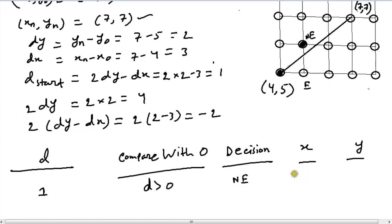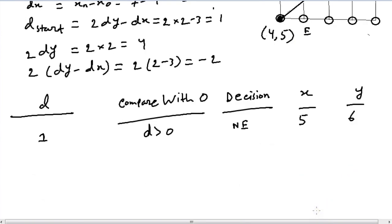So, our x coordinate would be incremented by 1 which would become 4 plus 1 equals 5. And since we chose NE, our y coordinate would also be increased by 1 which is 5 plus 1 equals 6. In the next iteration, since we chose NE, we have to increment our d value by minus 2. So, it's 1 minus 2 equals minus 1.